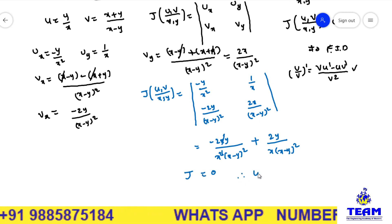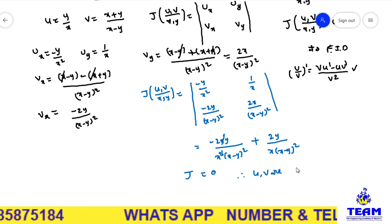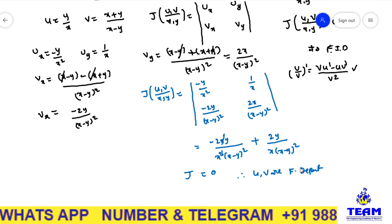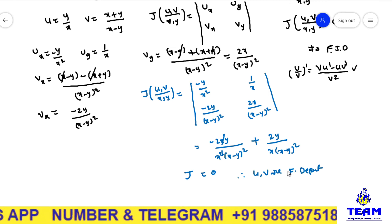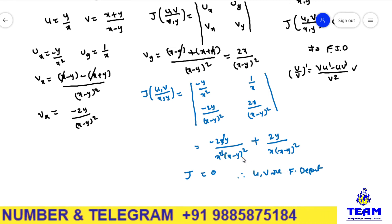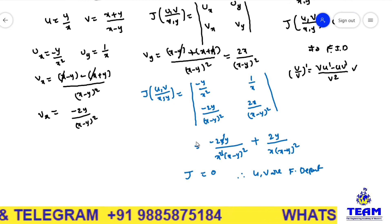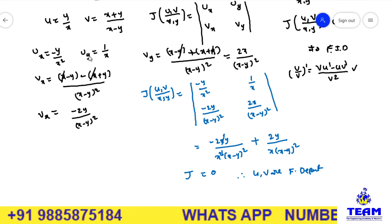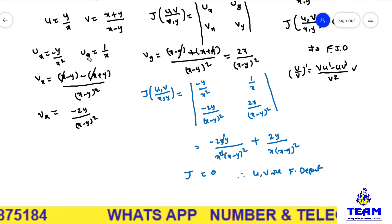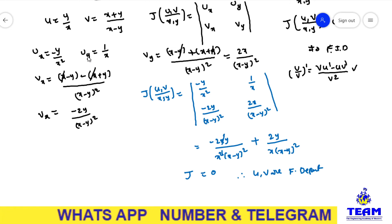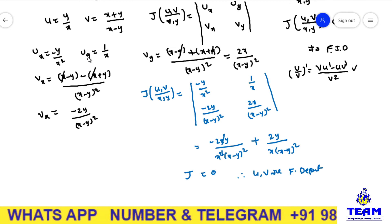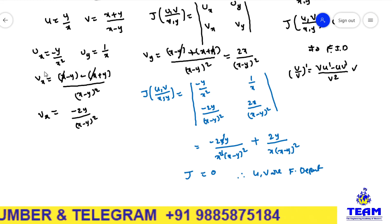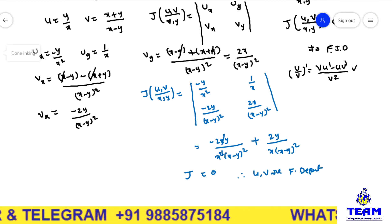Therefore you can say u and v are functionally dependent, functionally related. So now we find the relation between them. This is a trial and error method — every time we cannot get it the same way; sometimes we have to know some formulas. This problem is very easy, but sometimes it is very complicated. Based on practice only we can do it. Now I am going to find the relationship.